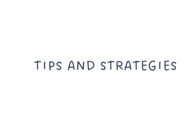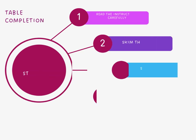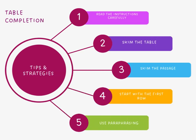There are some tips and strategies for table completion. Tip number one: read the instructions carefully — pay attention to any specific requirements such as word limits or number of words you can use in each cell of the table. Secondly, skim the table before diving into the passage. Take a quick look at the table itself, note the column headings and the type of information you need to fill in. Understanding the structure of the table will help you focus on the right details in the passage.